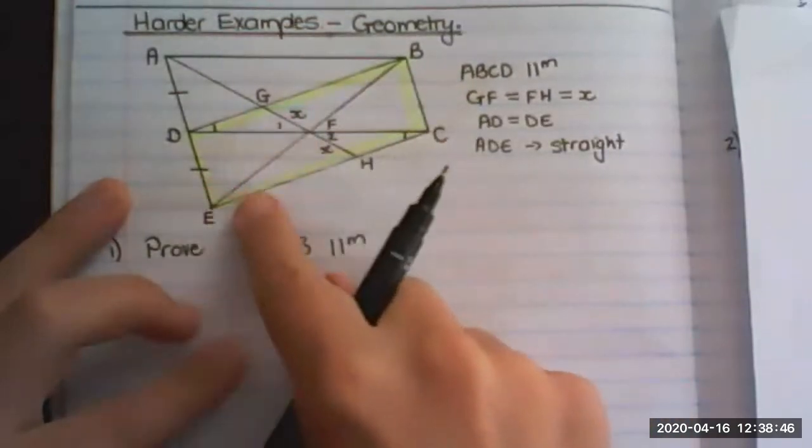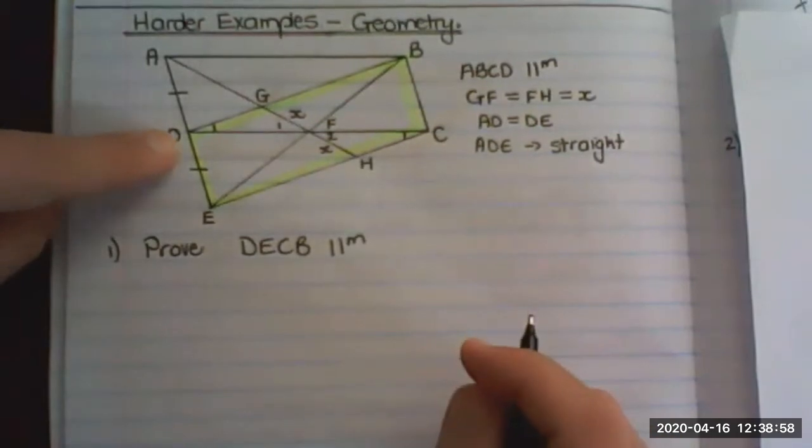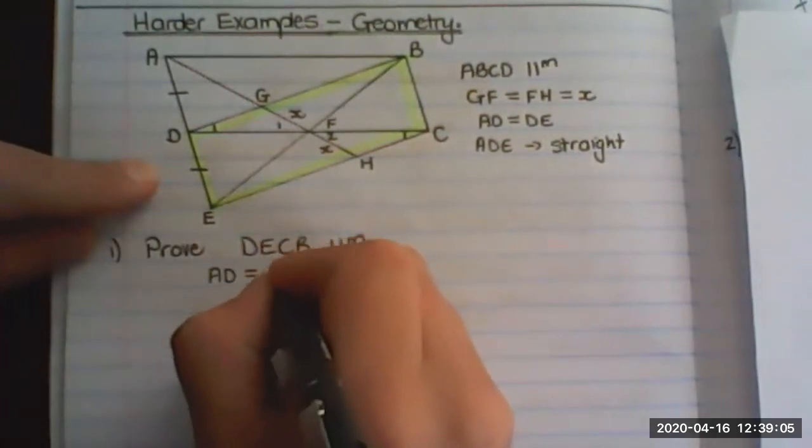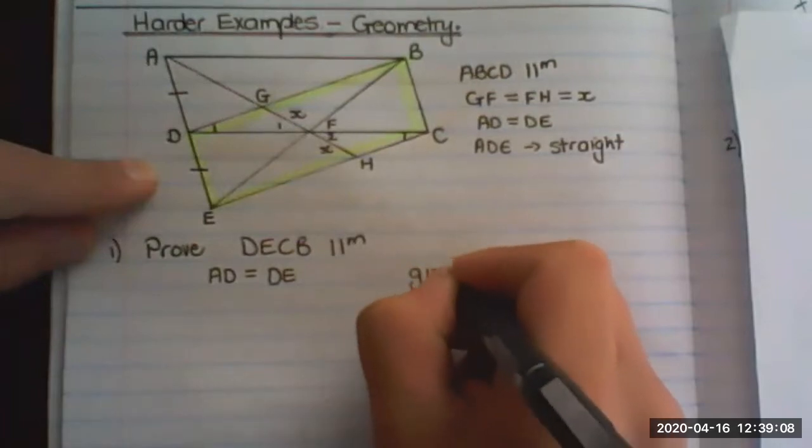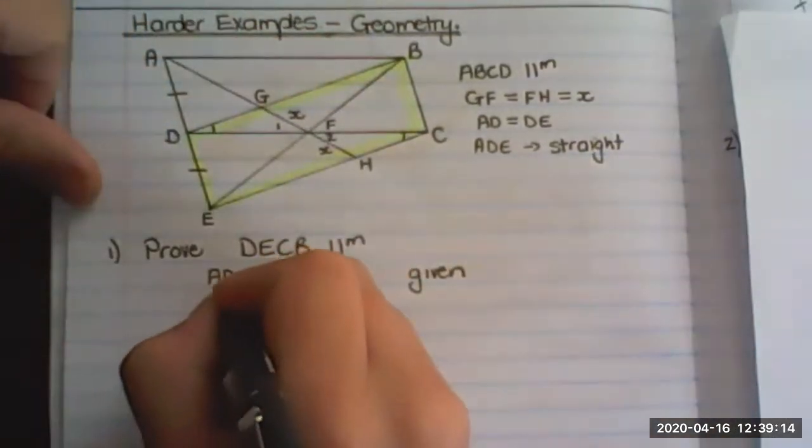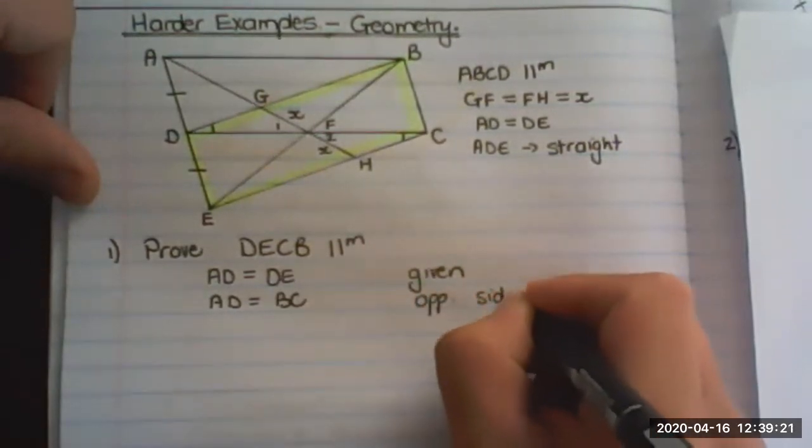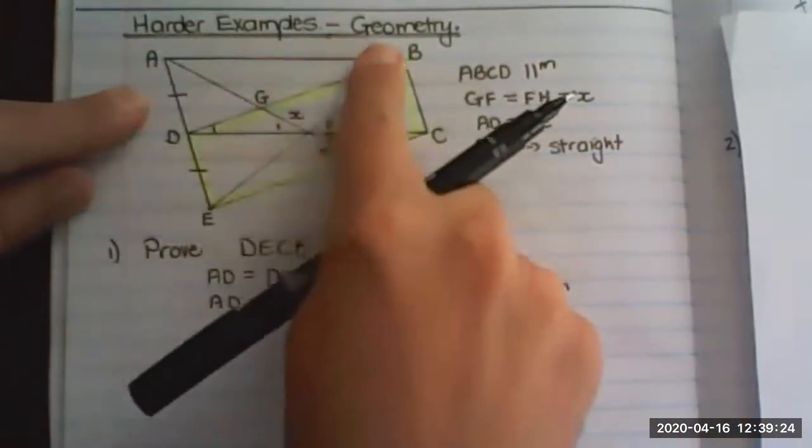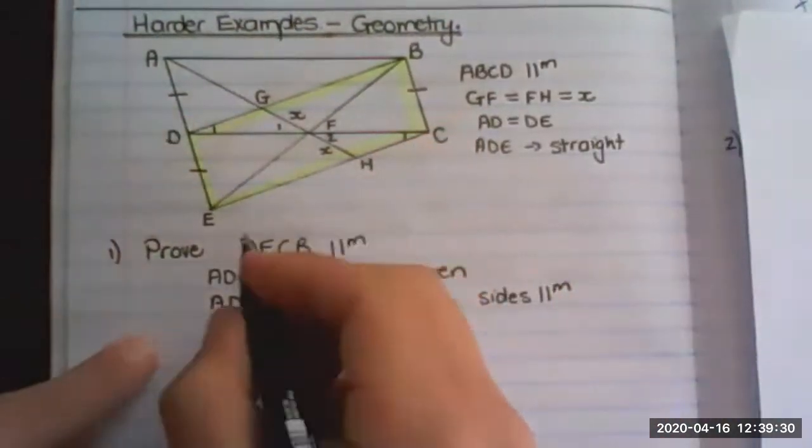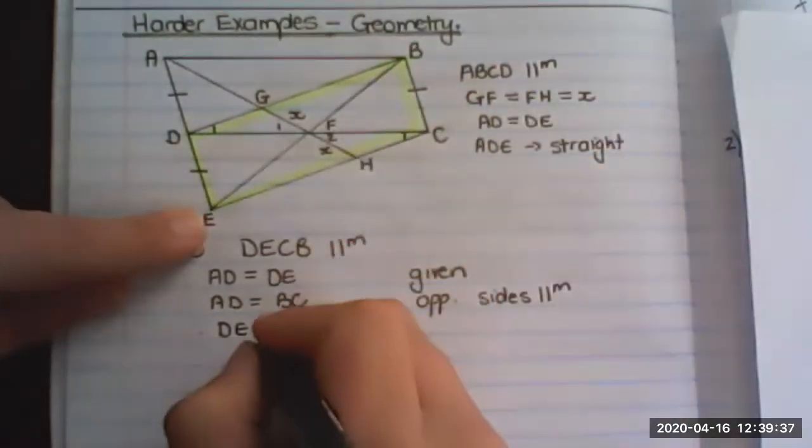So that's what we want to prove is a parallelogram. AD is given equal to DE. But AD is also equal to BC because opposite sides of a parallelogram are equal. Remember, ABCD is a parallelogram and opposite sides are equal. Therefore, DE is equal to BC.